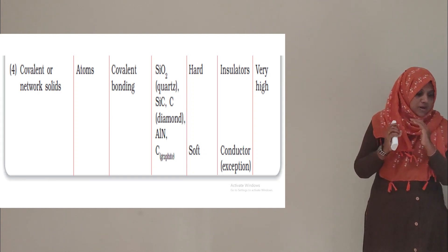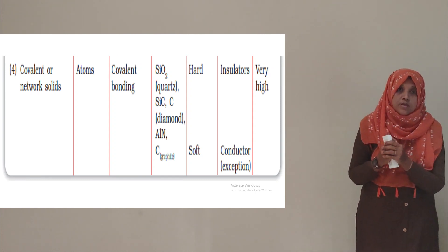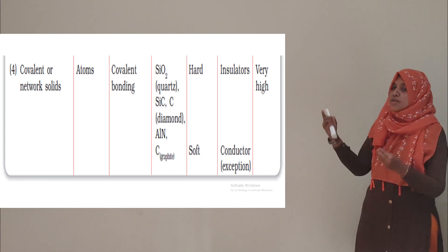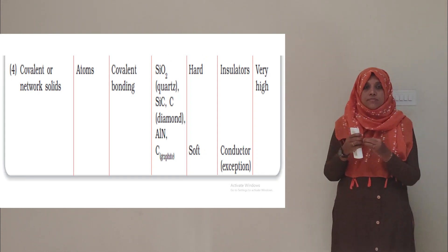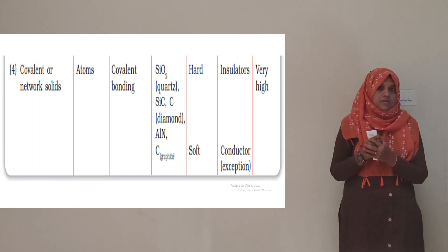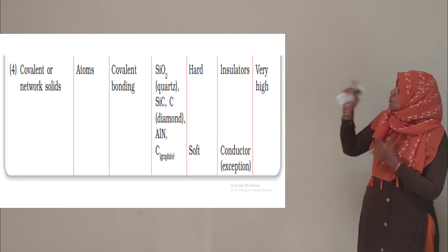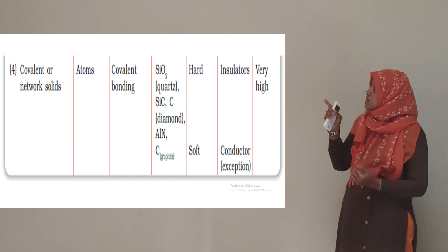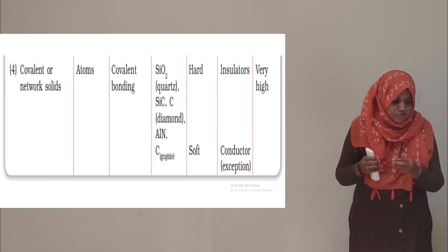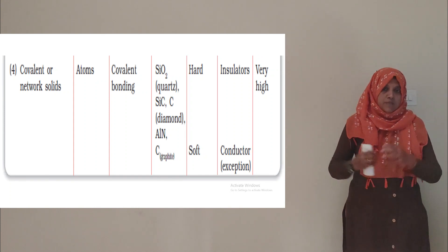In covalent solids, non-metal atoms are bonded together. Electrons are shared between atoms through mutual sharing, forming covalent bonds. This forms a network solid, where a network structure is formed throughout the crystal.